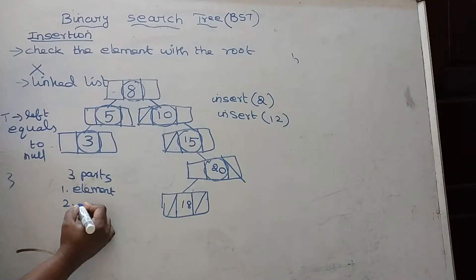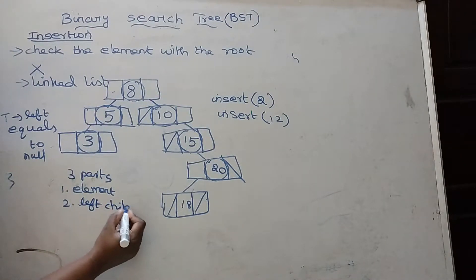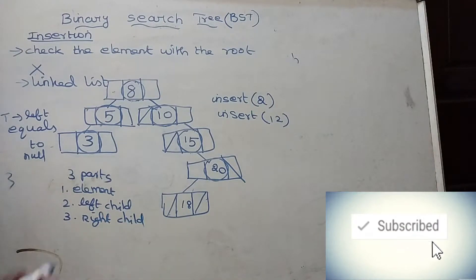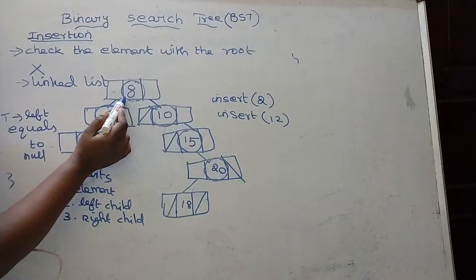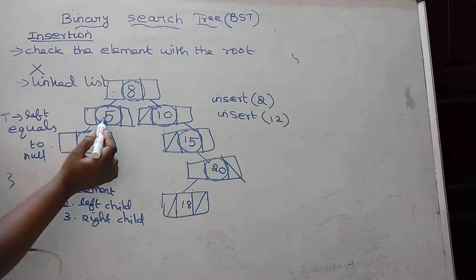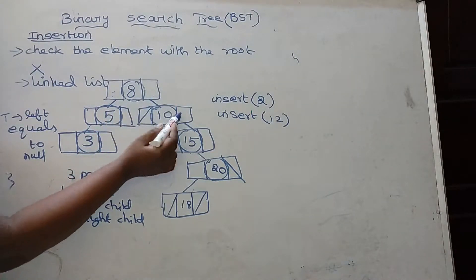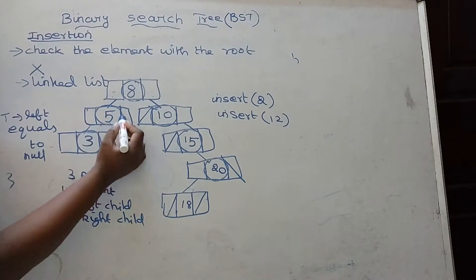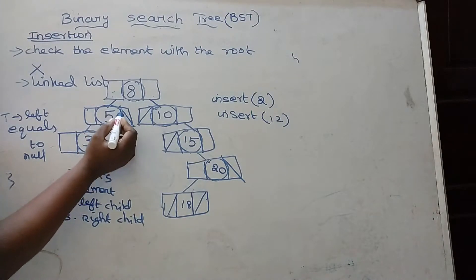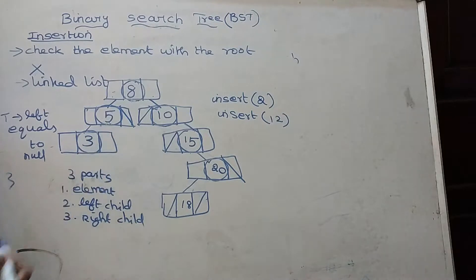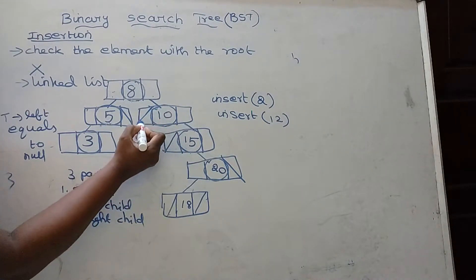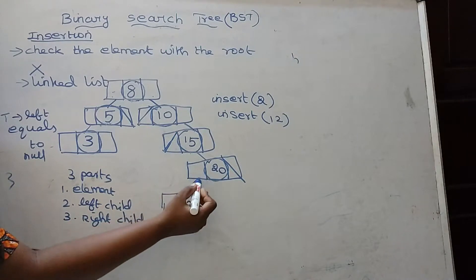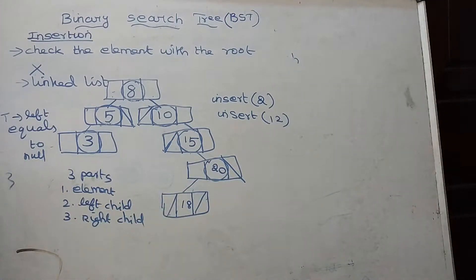The left part will have the address of the left child, and the right part will have the address of the right child. So node 8's left pointer will have the address of its left child, and the right pointer will have the address of its right child. Node 5 has a left child but no right child, so the right pointer is represented by a null value. If a left child is not there, we keep that as null.